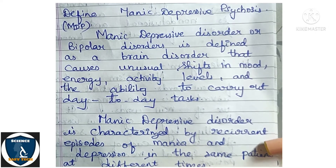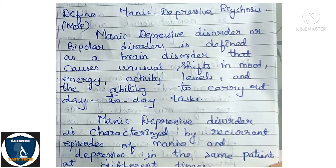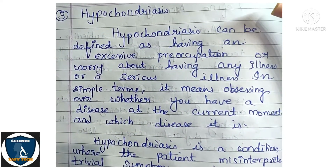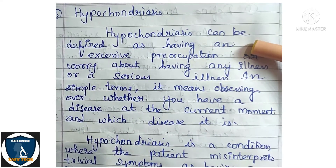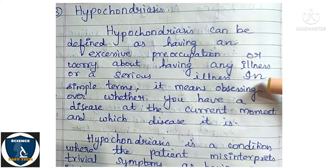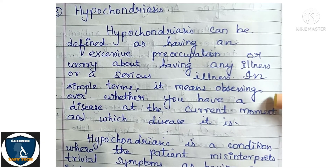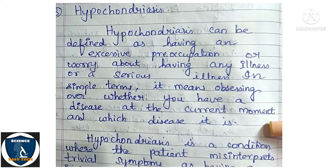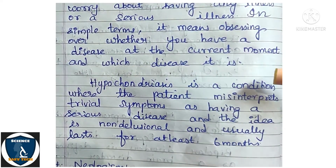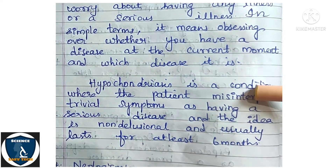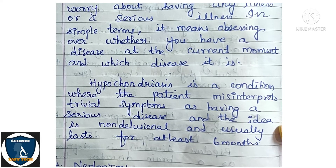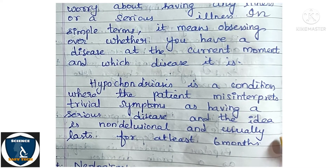Manic depressive disorder is characterized by recurrent episodes of mania and depression in the same patient at different times. Third question: Hypochondriasis. Hypochondriasis can be defined as having an excessive preoccupation or worry about having a serious illness. The patient misinterprets trivial symptoms as having a serious disease; the idea is non-delusional and usually lasts for at least six months.